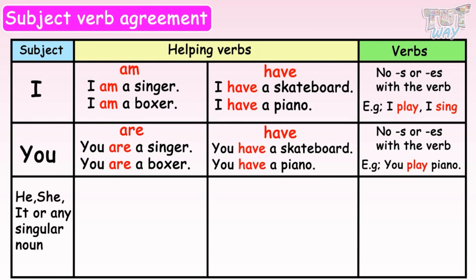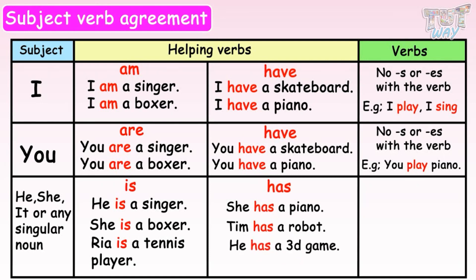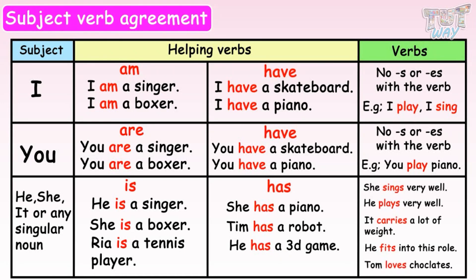Now let's learn the rules for he, she, it, or any singular noun. If the subject is he, she, or any singular noun, we use is with it. For example: He is a singer. She is a boxer. Ria is a tennis player. Also, only helping verb has is used if the subject is he, she, it, or any singular noun: She has a piano. Tim has a robot. He has a 3D game. And when we are using a verb with he, she, it, or any singular noun, we put S or ES with the verb. She sings very well. He plays very well. It carries a lot of weight. He fits into this role. Tom loves chocolates. So these were the rules.